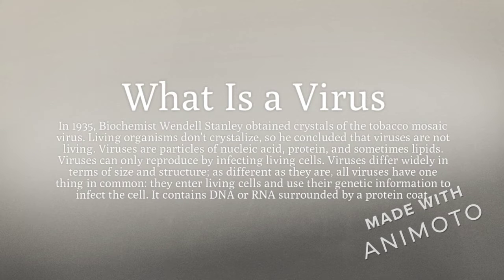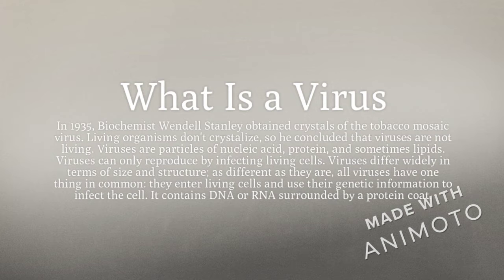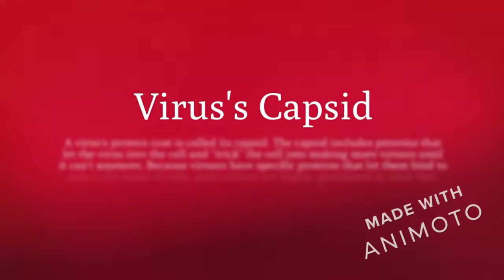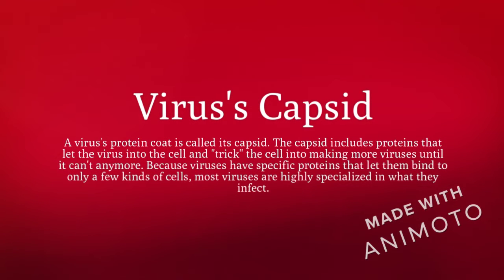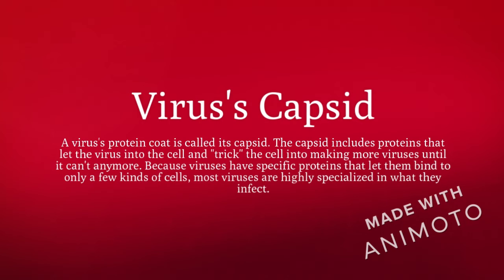Viruses can only reproduce by infecting living cells. Viruses differ widely in terms of size and structure. As different as they are, all viruses have one thing in common: they enter living cells and use their genetic information to infect a cell. It contains DNA or RNA surrounded by a protein coat called the capsid. The capsid includes proteins that let the virus into the cell and trick the cell into making more viruses. Because viruses have specific proteins that let them bind to only a few kinds of cells, most viruses are highly specialized in what they infect.